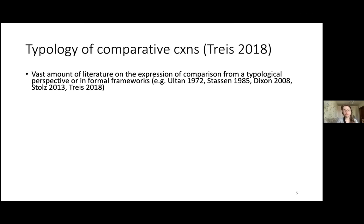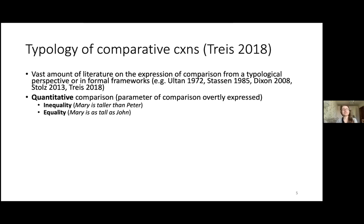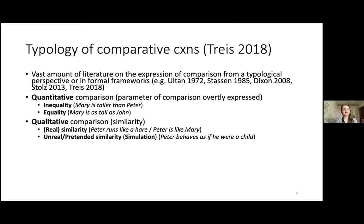There is a vast amount of literature on the expression of comparison, both from a typological perspective and in formal frameworks. Typologists usually distinguish between two major types. The first is quantitative comparison, divided into inequality — 'Mary is taller than Peter' — and equality — 'Mary is as tall as John.' The second major type is qualitative comparison, dealing with similarity of two entities: either real similarity, 'Peter is like Mary,' or unreal or pretended similarity, sometimes called simulation — 'Peter behaves as if he were a child.'